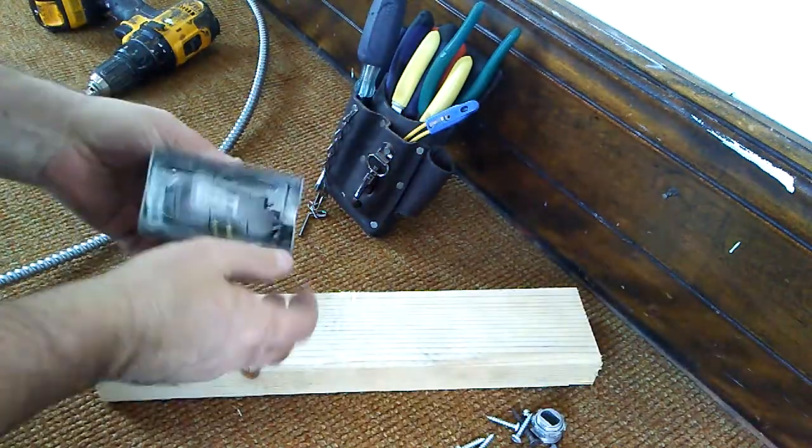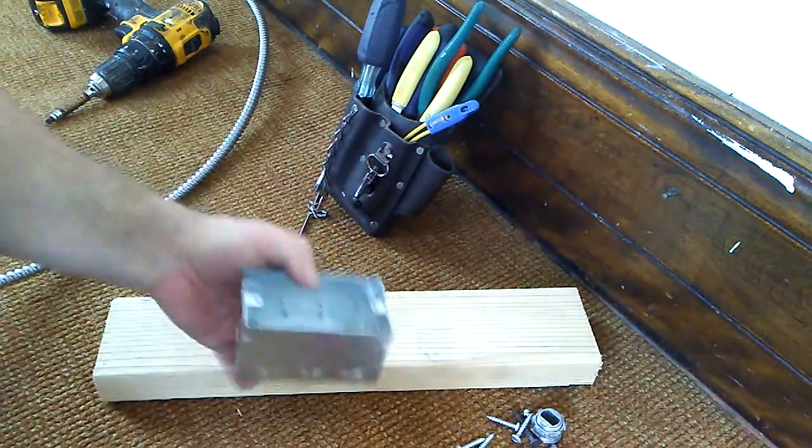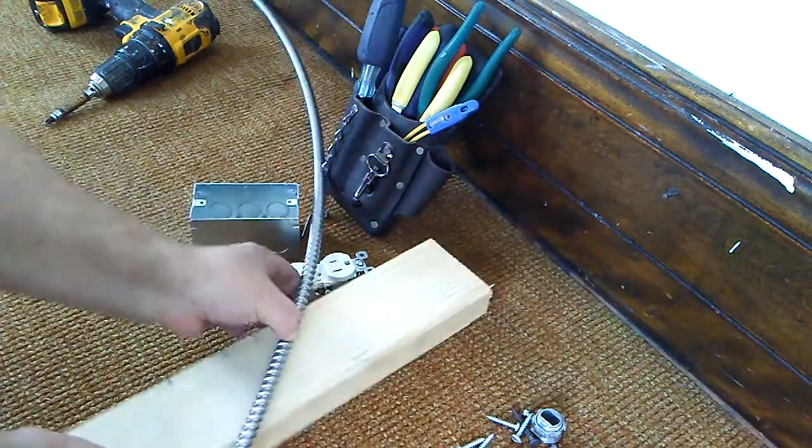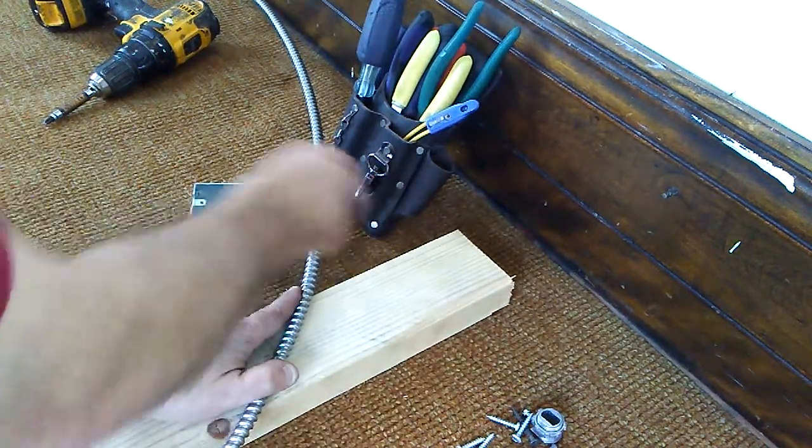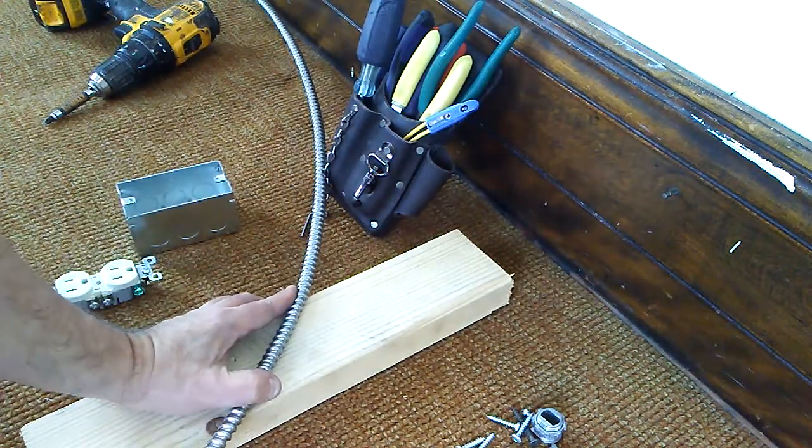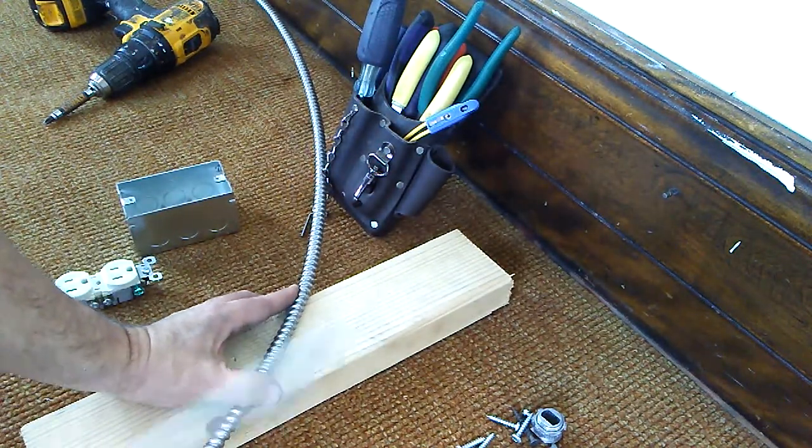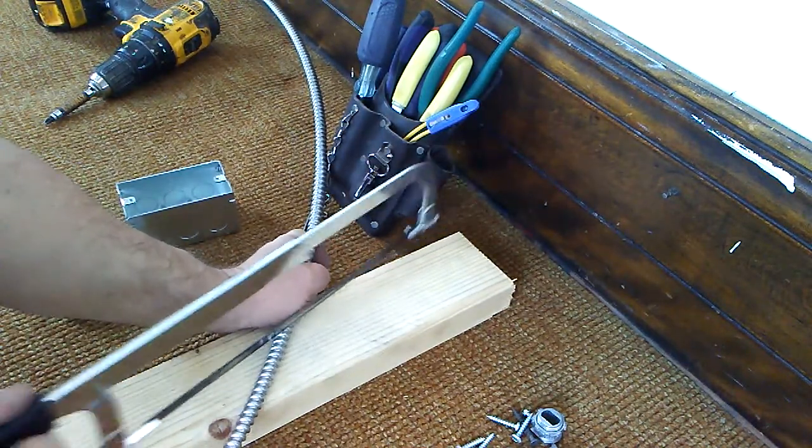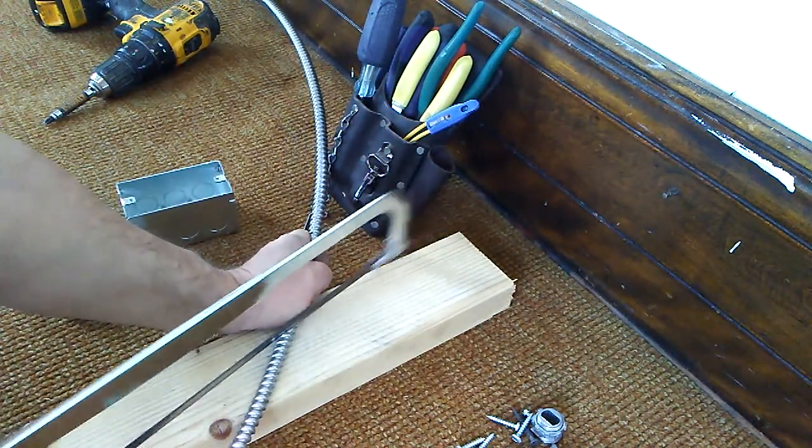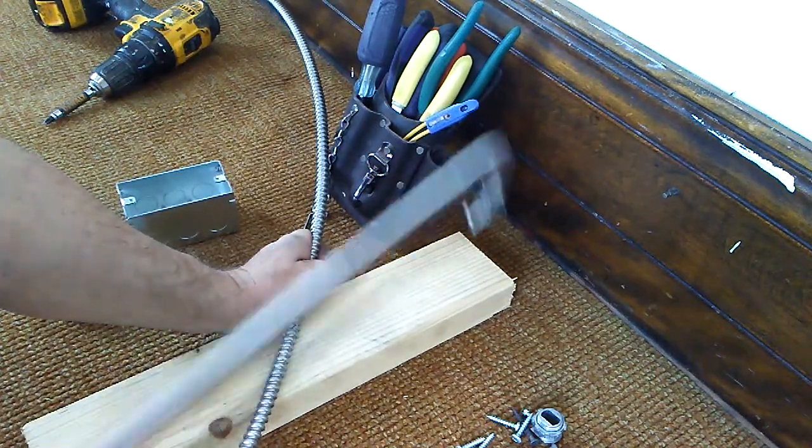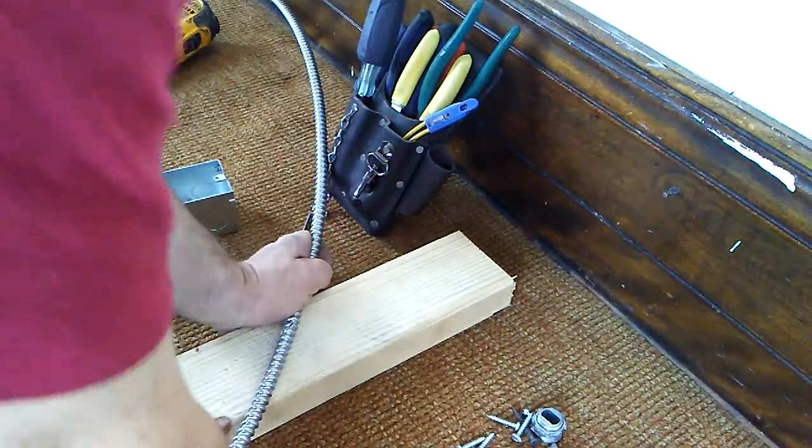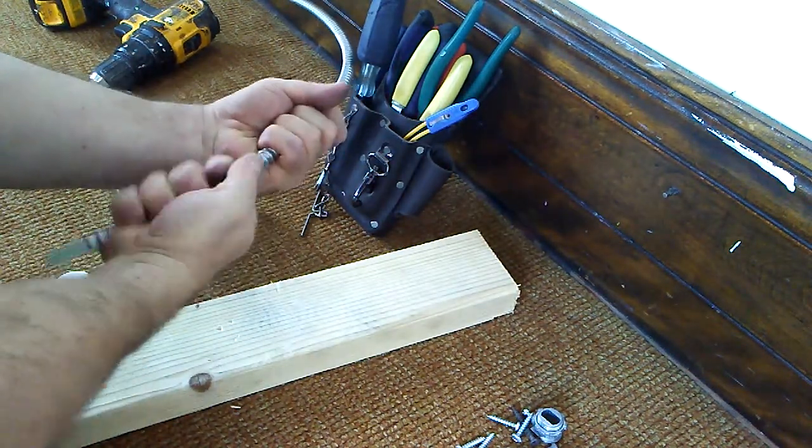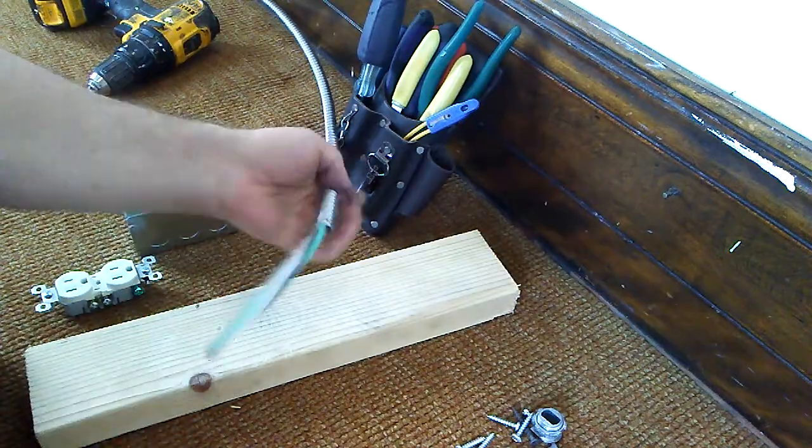So we're going to put an outlet on the end here. So we're going to cut the VX cable or MC cable here. Make sure we don't cut any wires. See, we cut right through there, but you've got to play with it a little bit to edge them off. There it goes.